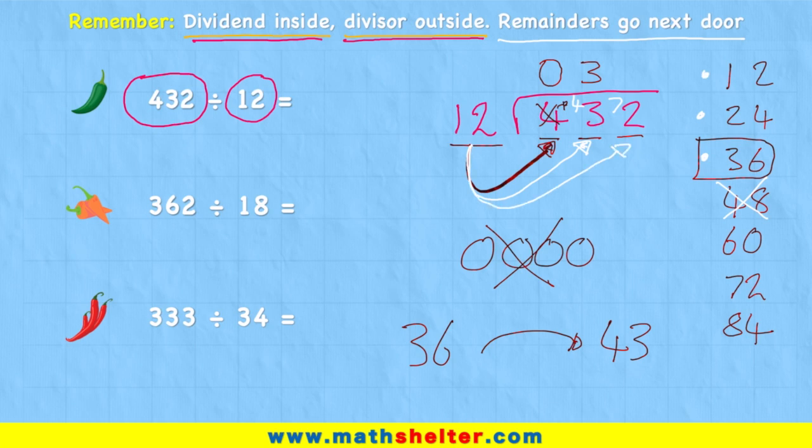Well, I can see I have 1, 2, 3, 4, 5, 6 whole groups of 12 in 72. So my final answer becomes 36.